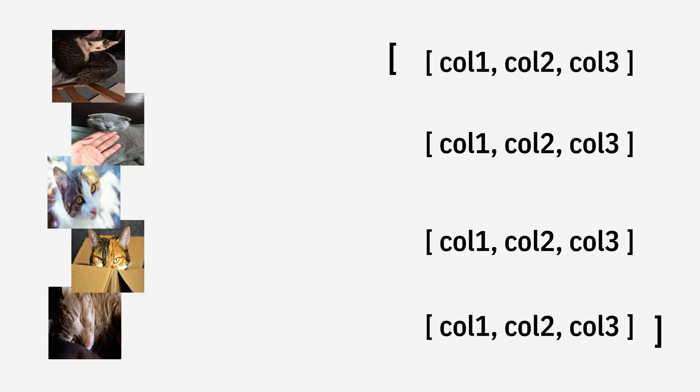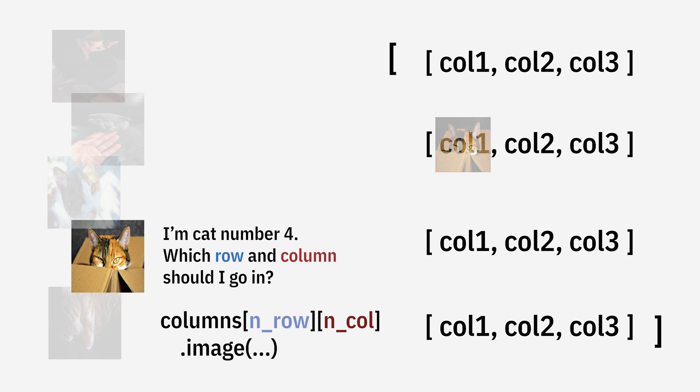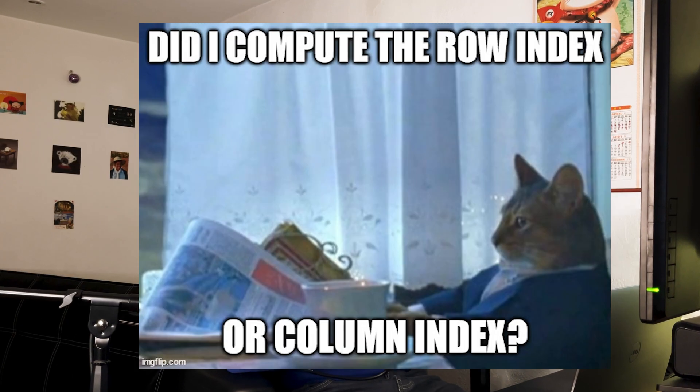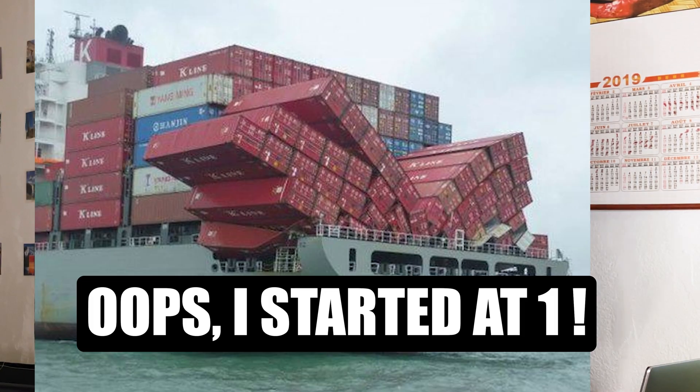Now we have two solutions. For each image, we could compute the row index and column index in the matrix and just put the image there. But this is prone to error because you've got to compute where the row is, where the column is, and what if you mess your calculation by one?